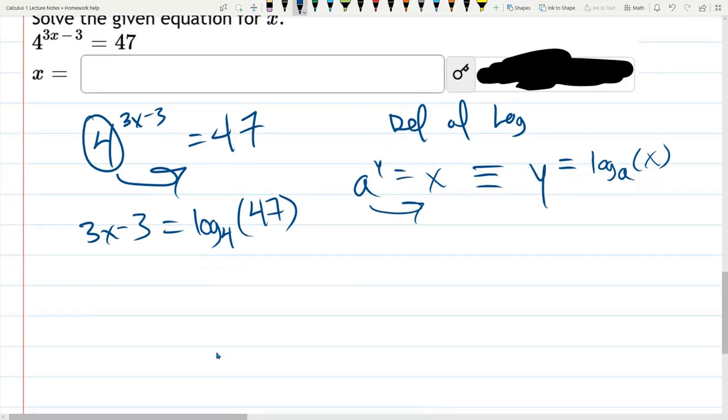Now, 47 is not a power of 4. And there's really no reduction you can do here. And what we're going to have to do when we type our answer in is rewrite it using base 10 or base e. And we'll do that at the very end.